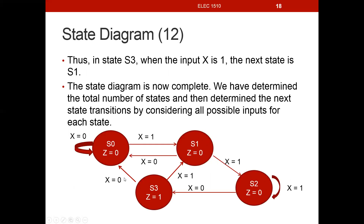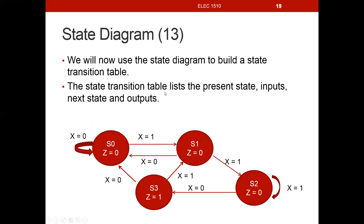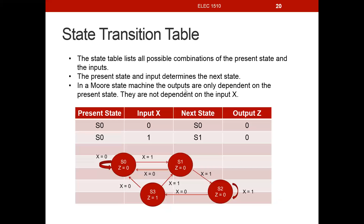This is now our completed state diagram for the sequence detector 1,1,0. When in S3 and x=0, no state recognized 1,1,0,0 so we transitioned to S0. When in S3 and x=1, we kept breaking down until we got the rightmost 1, so S1 recognizes that we received a 1. We've accounted for every single input value and every transition from one state to another. The next step is building a state transition table listing the present state, the inputs, the next state, and the outputs — that will be the subject of the next lecture video.